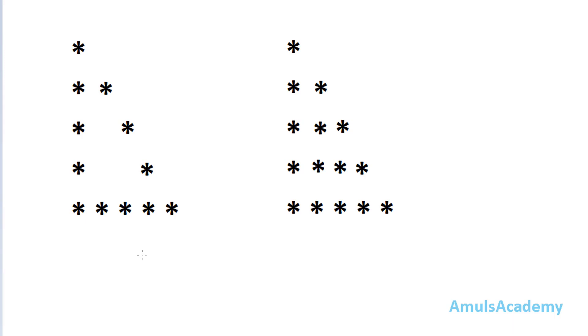Hello guys and welcome to Python programming tutorials by Amuls Academy. Today in this tutorial we are discussing about a pattern program - how we can print stars in the hollow right triangle shape. We already discussed about how we can print stars in the right triangle shape, but today we are discussing about the hollow right triangle shape. So let's start the program.